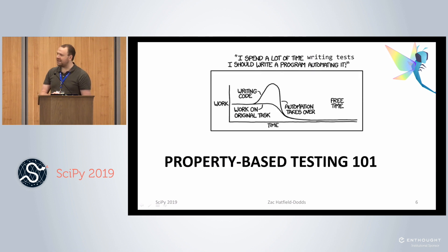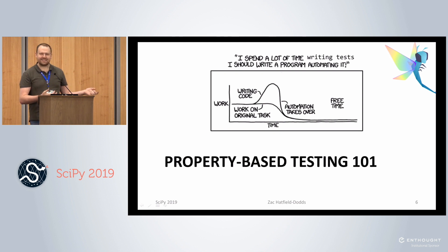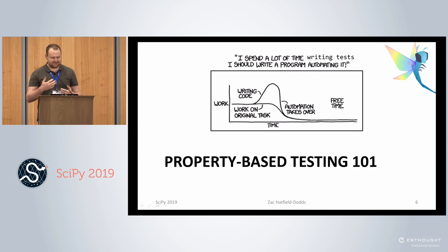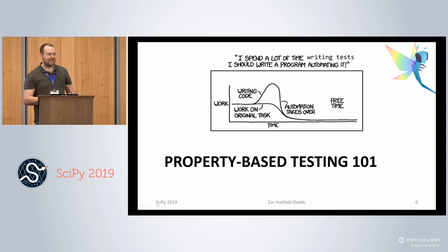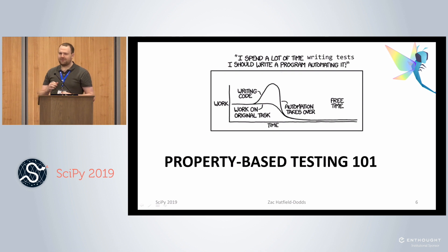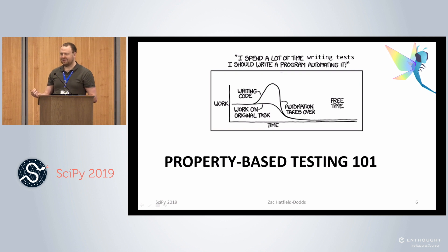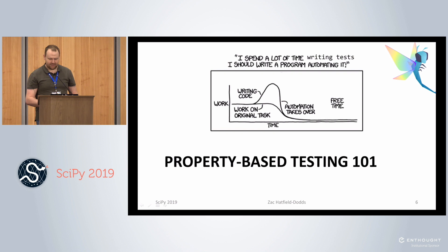We're going to talk today about a technique called property-based testing. This is the XKCD tax for the talk: you have some original task — perhaps that's testing — you write some more code, automation takes over, testing is improved, and you have free time for other valuable activities. There's also Jevon's paradox from economics: when things get much cheaper, total expenditure on them might actually increase, because the value you get out of them is now much higher.